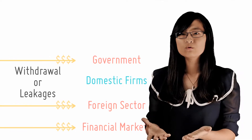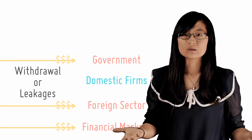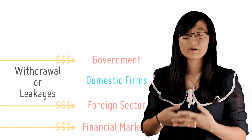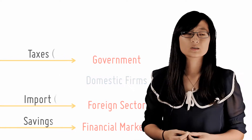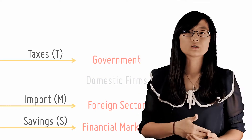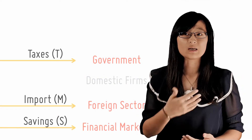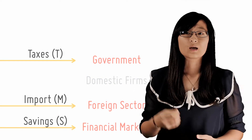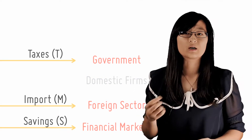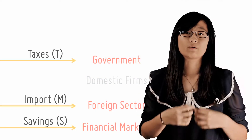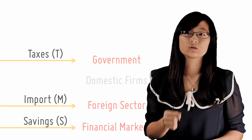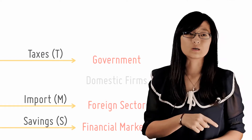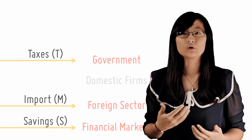So how exactly does money move into these three sectors? Financial markets are essentially banks — money flows into them in the form of savings. Governments will take a portion of your money in the form of taxes, and your money goes into the foreign sector when you import goods and services from overseas.